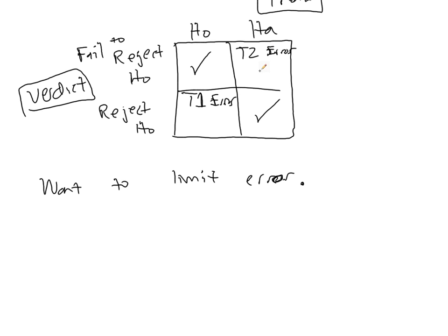We, unfortunately, can't limit the Type II error, because the alternative hypothesis is usually stated as a range of values. For example, pi greater than 0.6.